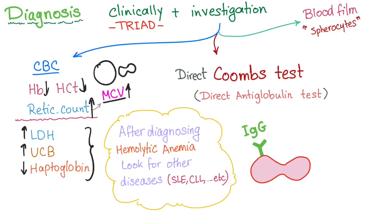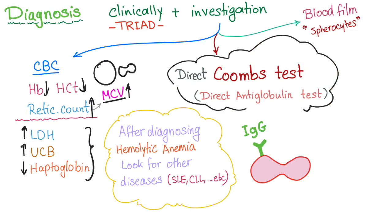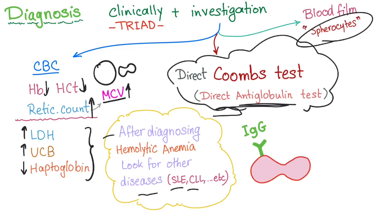The gold standard is the direct Coombs test, also known as the direct anti-globulin test. After you diagnose hemolytic anemia, please look for other diseases such as lupus or CLL. Blood film will show spherocytes. This is different from hereditary spherocytosis — having spherocytes alone does not mean hereditary spherocytosis; it could also be hemolysis such as this case.